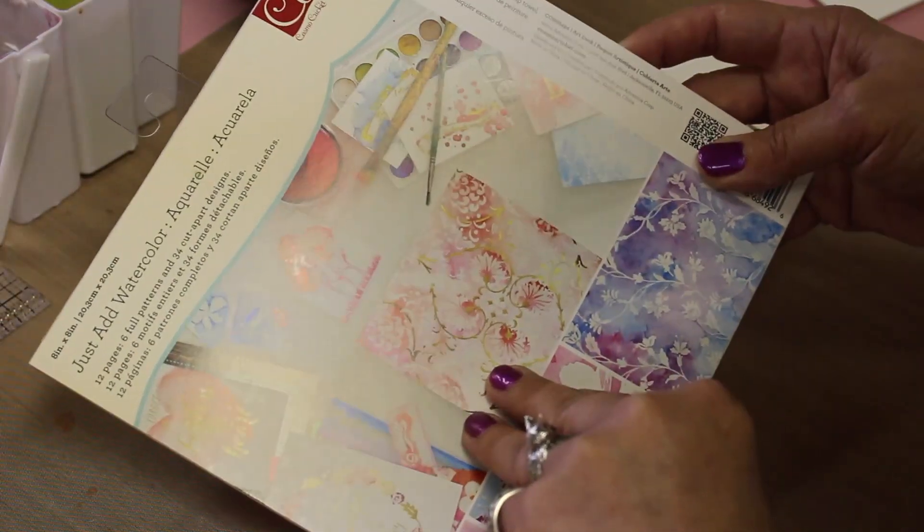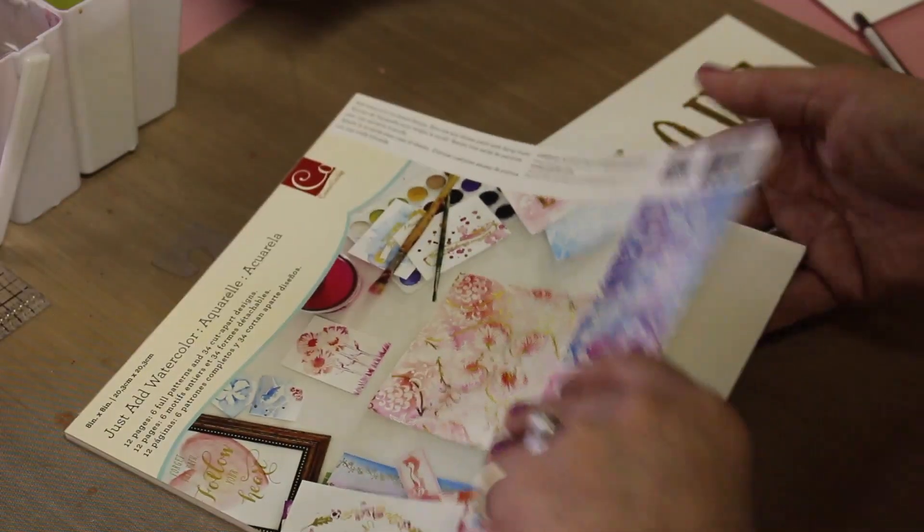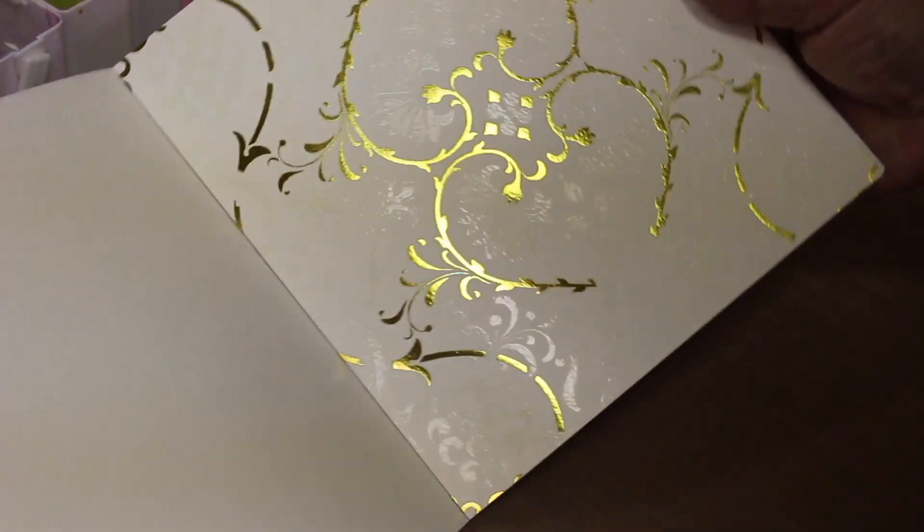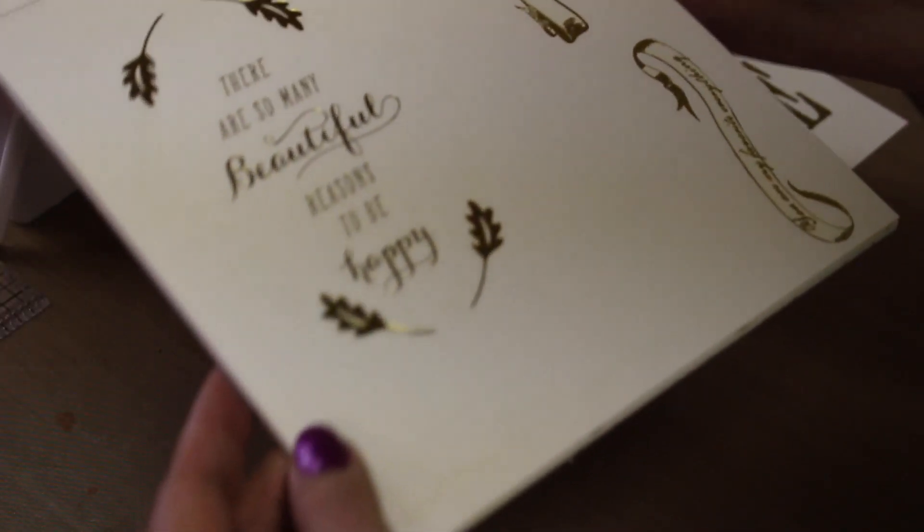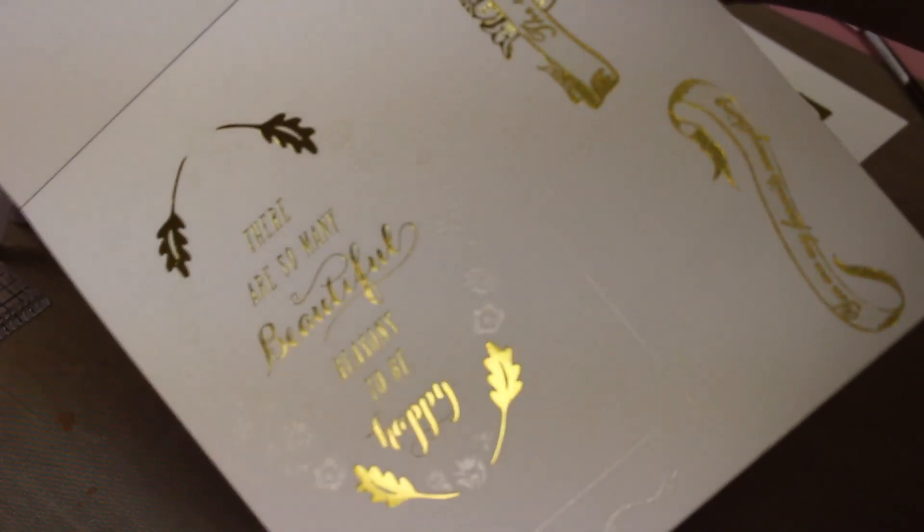This is the Just Add Watercolor Pad from Cosmo Cricket and I wanted to show you what some of the pages look like and how cool this resist is going to be when you put your watercolor over it. Lots of different patterns that they have in here and some of them are gold foil and there's foil mixed with the varnish. It's not embossing powder but it acts like it when you put the watercolor over it. There are some sections like these where you cut them apart and use them separately.